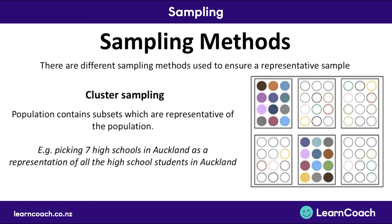Another sampling method is cluster sampling. A population contains subsets which are representative of the whole population, and cluster sampling uses some of these subsets or clusters as samples. For example, if your target population was all high school students in Auckland, cluster sampling would involve picking seven high schools in Auckland as a representation of all high school students — each high school is the subset or cluster.